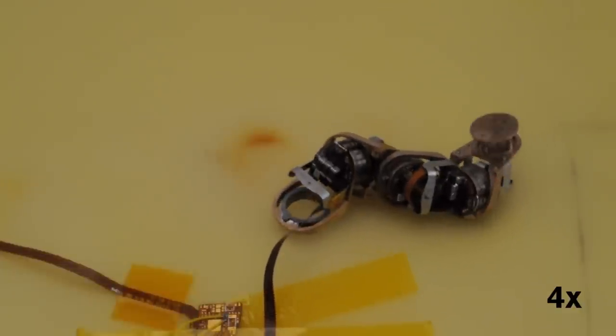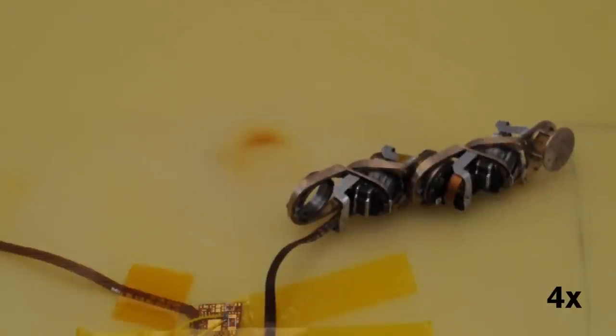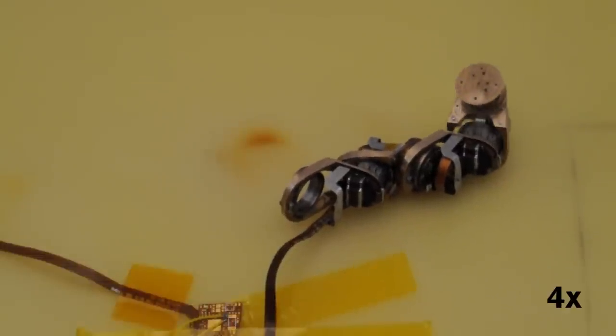Every module gets its instructions to turn left, right, or straight. That's like the DNA code for the shape. And then the motors fold the chain up into the shape.